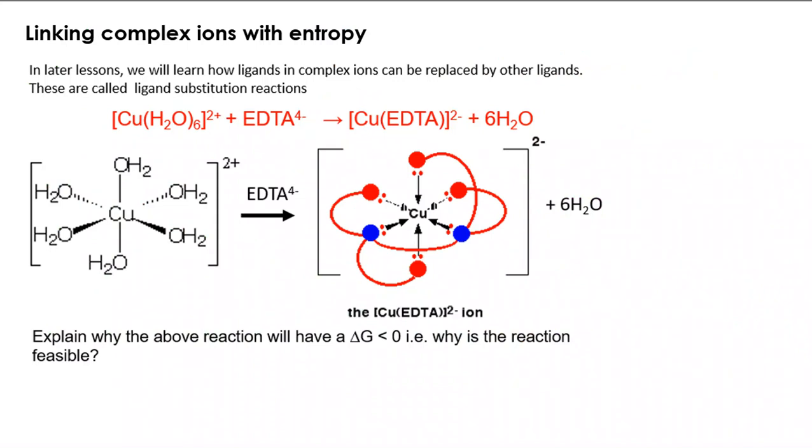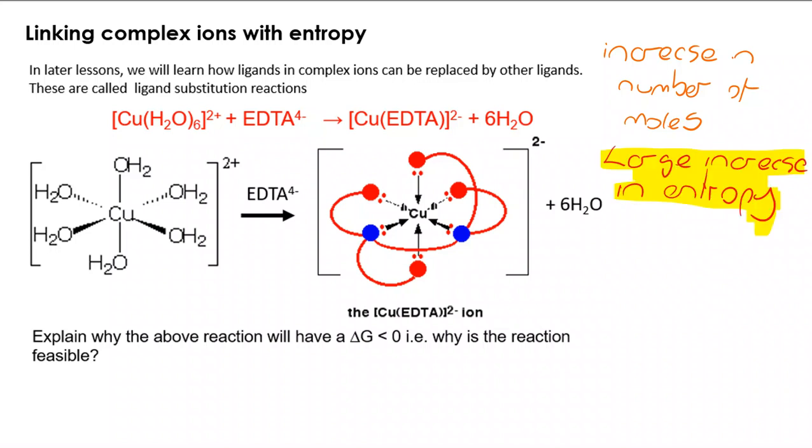Let's take a look at this, linking complex ions with entropy. We've got our coordinate number six. We've got six waters around the copper, the copper plus two. If we add EDTA, we end up with our multidentate ligand, one of them, replacing six H2O. So why would delta G be less than zero? And why is this reaction feasible? We're making cross links here with thermodynamics. First thing to notice is that there is an increase in the number of moles. It's not just a small increase. We're going from one complex and one EDTA to one complex and six water. That means there's a large increase, two to seven. That means there's a large increase in entropy.